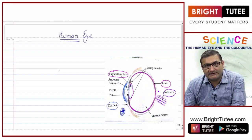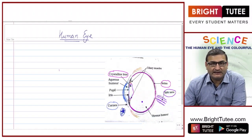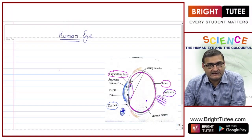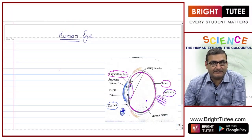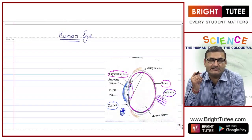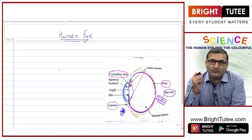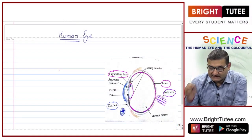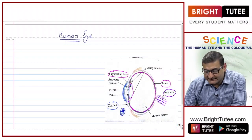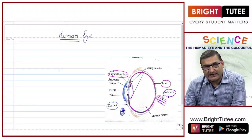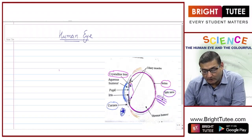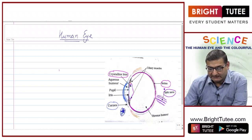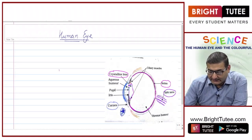These optic nerves carry the electrical signals generated by the light-sensitive cells on the retina to the brain, where these signals are interpreted and our brain tells us what exactly we are looking at. Apart from these, there are other important parts as well.